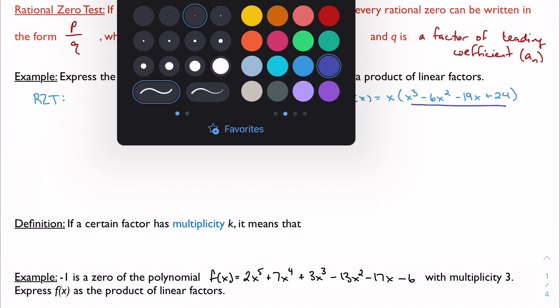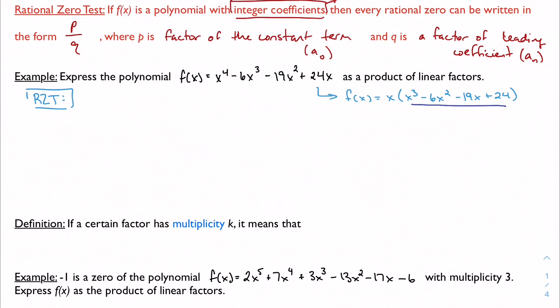Applying the Rational Zero Test, I start by looking at factors of the constant and factors of the leading coefficient. Factors of 24: 1 and 24, 2 and 12, 3 and 8, 6 and 4. I should note it's plus or minus p/q — that's important because I can have negative roots too. So possible rational zeros are plus or minus any combination of p divided by q: ±1, ±2, ±3, and so on.